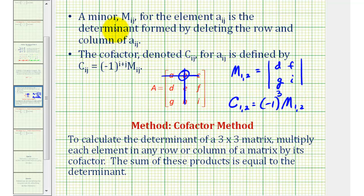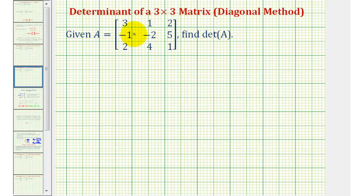Now that we know what the minor and cofactor are, we can use the cofactor method to find the determinant of a three-by-three matrix. We multiply each element in any row or column by its cofactor, and the sum of those products equals the determinant. Since none of the elements are zero, let's work across the first row using the cofactor method.